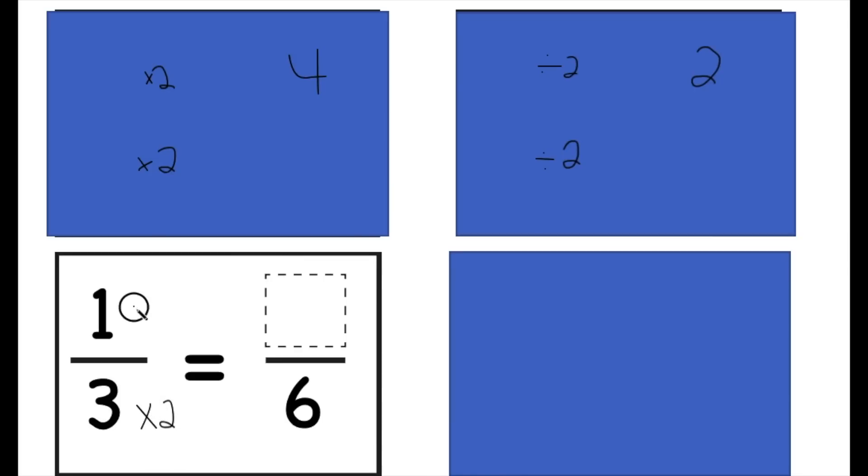Whatever I do to the denominator, I also have to do to the numerator. So I should have now taken 1 times 2. So 2/6 is equivalent to 1/3.